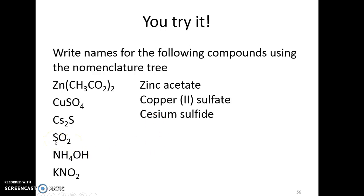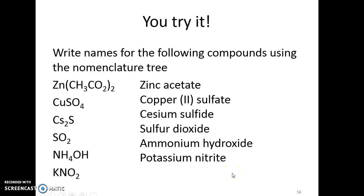This is a nonmetal, so we've got to use a prefix system. Sulfur dioxide. That's an ionic compound. What ionic compound is ammonium with hydroxide, so we just say ammonium hydroxide. And then here we have potassium with nitrite. Potassium is in the first column, always positive 1, so we just say potassium and no charge.